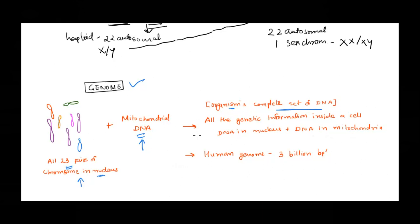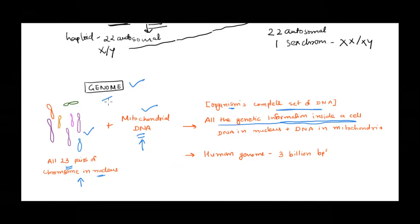It's nothing but taking into consideration all the genetic information that is present inside a cell of an organism. For humans, inside a cell we have nuclear DNA and we have mitochondrial DNA. When you put all of that together, it becomes the genome of an individual.